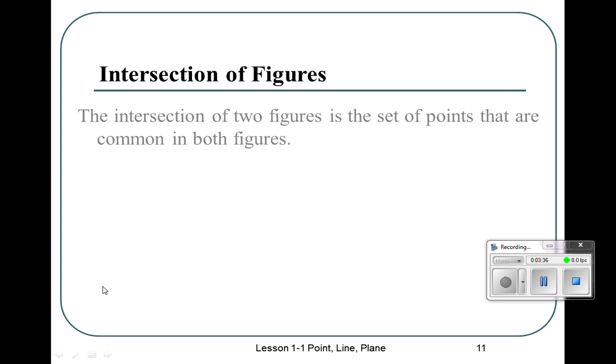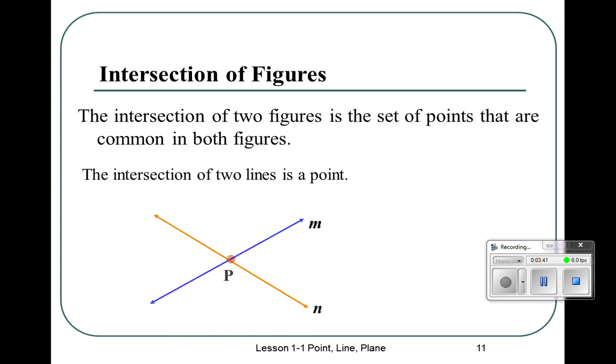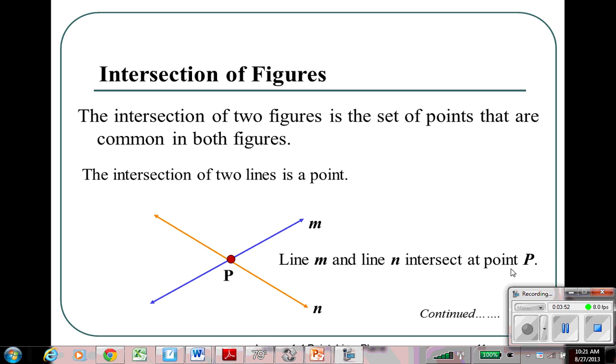Okay, now let's look at figures that are intersecting. Two lines will intersect in a point. And we say that line M and N intersect at point P. Or we could say point P is the intersection of lines M and N.